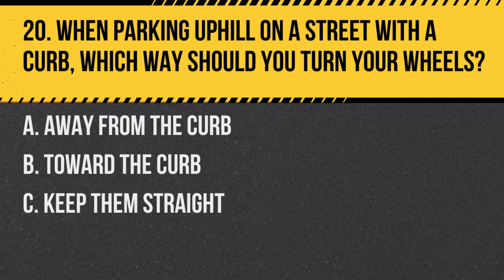Question 20. When parking uphill on a street with a curb, which way should you turn your wheels? A. Away from the curb. B. Toward the curb. C. Keep them straight. Answer: A. Away from the curb. When parking uphill with a curb, turn your wheels away from the curb, so the car will roll into the curb if the brakes fail.